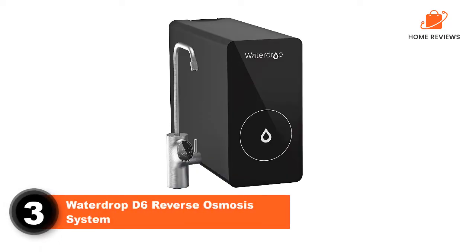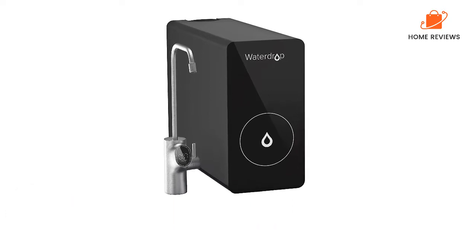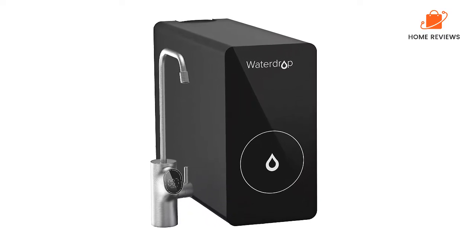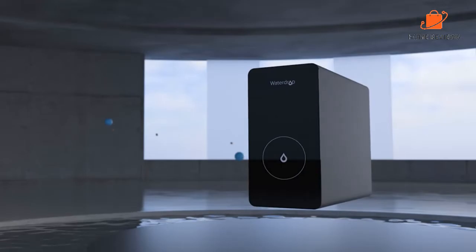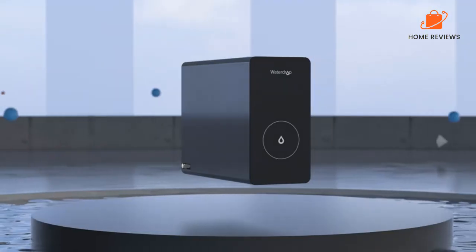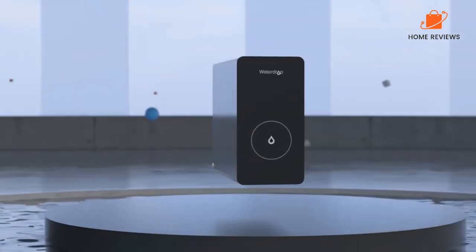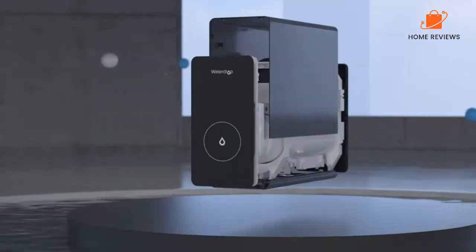Number 3: Waterdrop G6 Reverse Osmosis System. A tankless reverse osmosis system saves space under the sink, produces less wastewater, and increases the system's capacity to produce purified water. The Waterdrop G6 RO water filtration system is a great option if you're looking to do all of that and enjoy easy maintenance of the system.